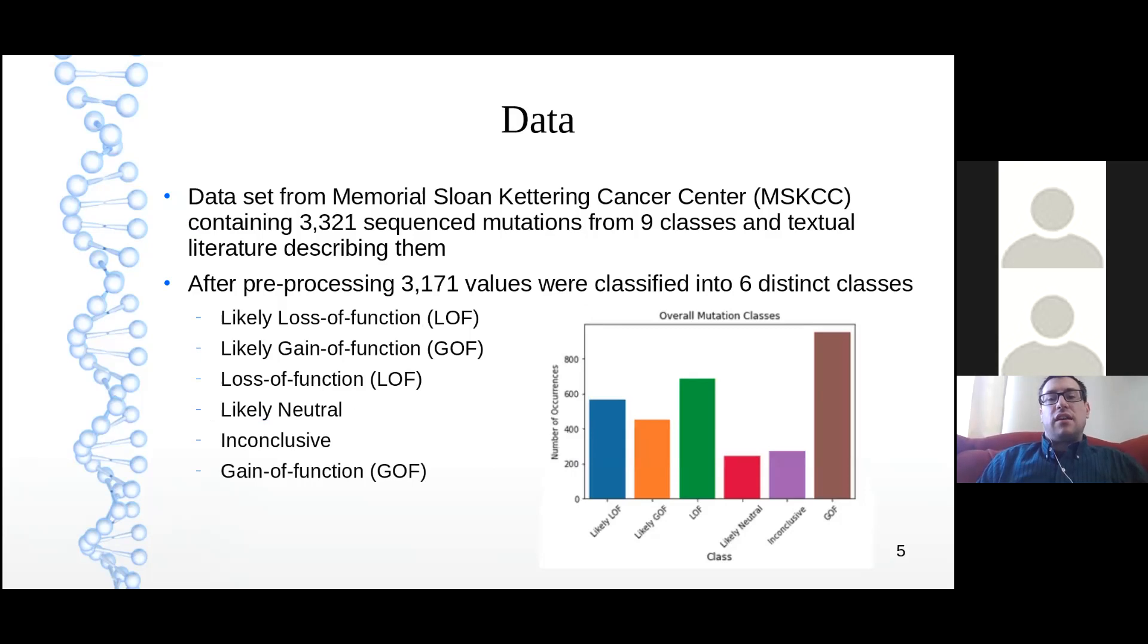A dataset to do this was obtained from the Memorial Sloan Kettering Cancer Center, and it contained over 3,300 sequence mutations representing nine classes of mutations, as well as the textual literature describing the mutations. Three of the classes didn't fit into my project, and I excluded them. After pre-processing, I was left with 3,171 values classified into six distinct remaining classes.